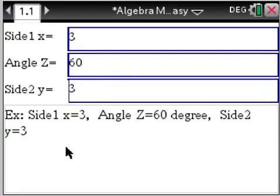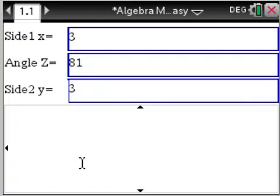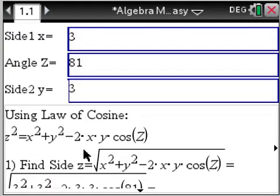S.A.S. Triangle. Let's change this angle Z to, let's do 81. Why not? Okay. So, as soon as I plug in my numbers, I get using the law of cosine,